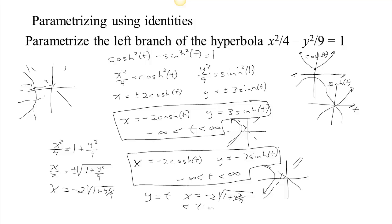The bounds here: since t equals y and the y values over the entire left branch run from negative infinity to infinity, that's our range for t. Different parameterizations are good for different purposes. One nice thing about the identity-based parameterizations is that they don't involve a square root, which can be messy to differentiate. Derivatives of sinh and cosh are always clean, so the hyperbolic parameterization may be the best choice when derivatives are needed.